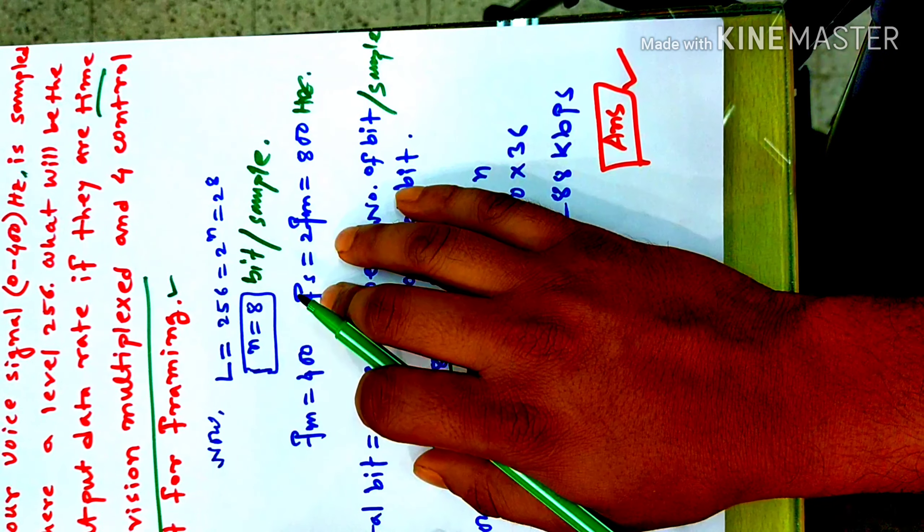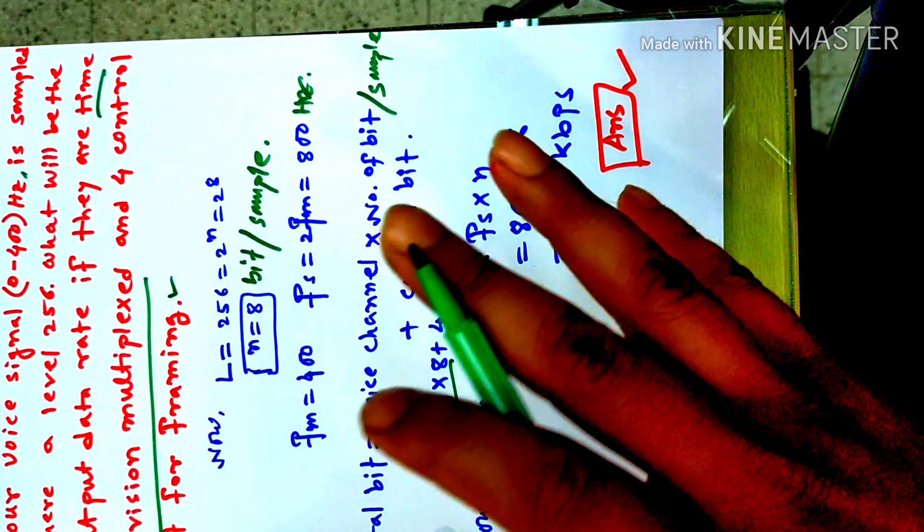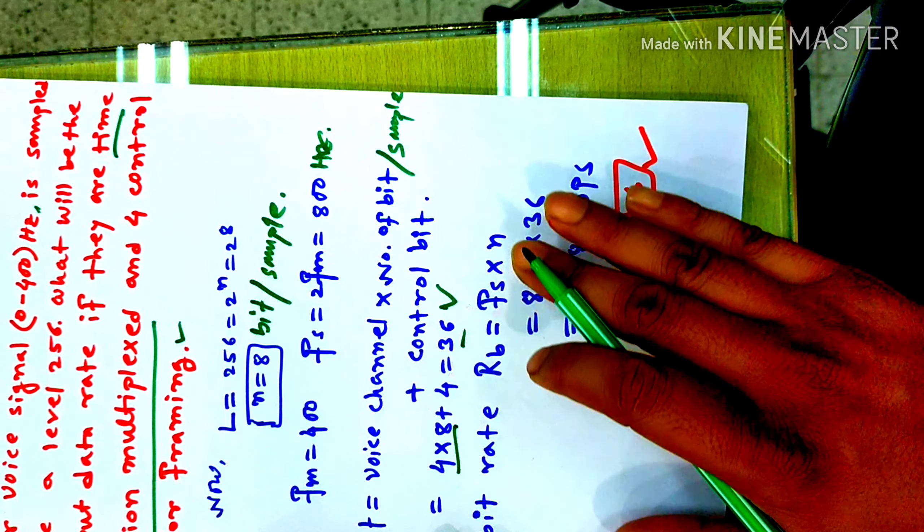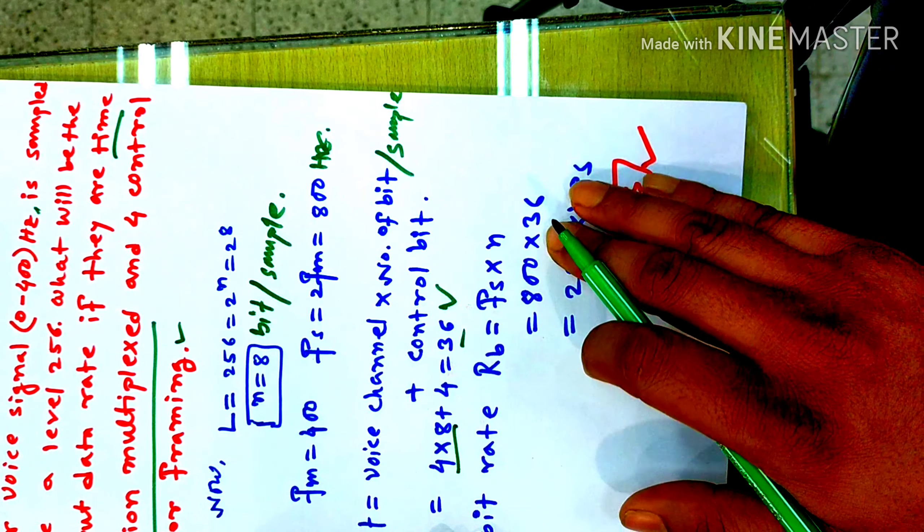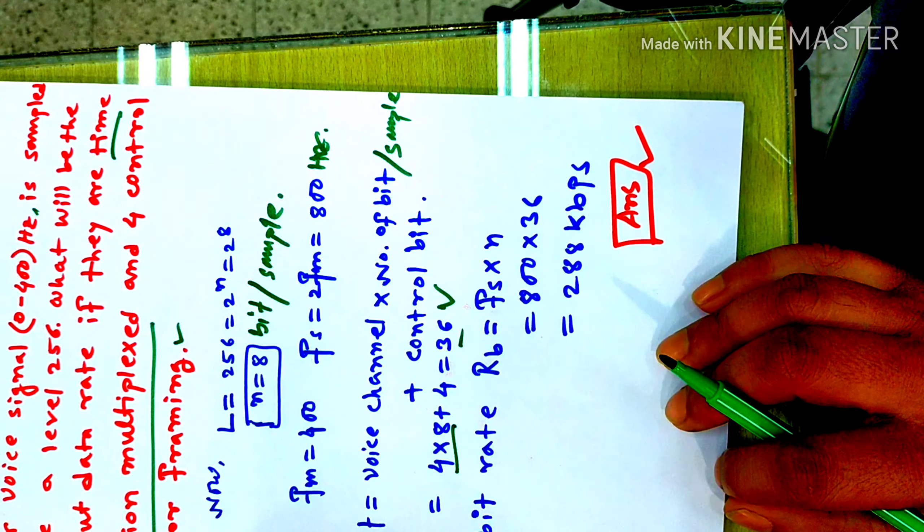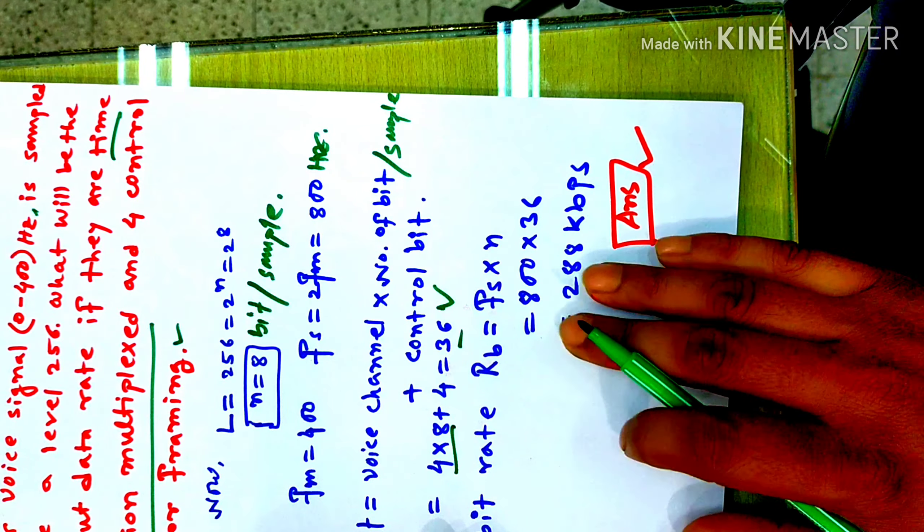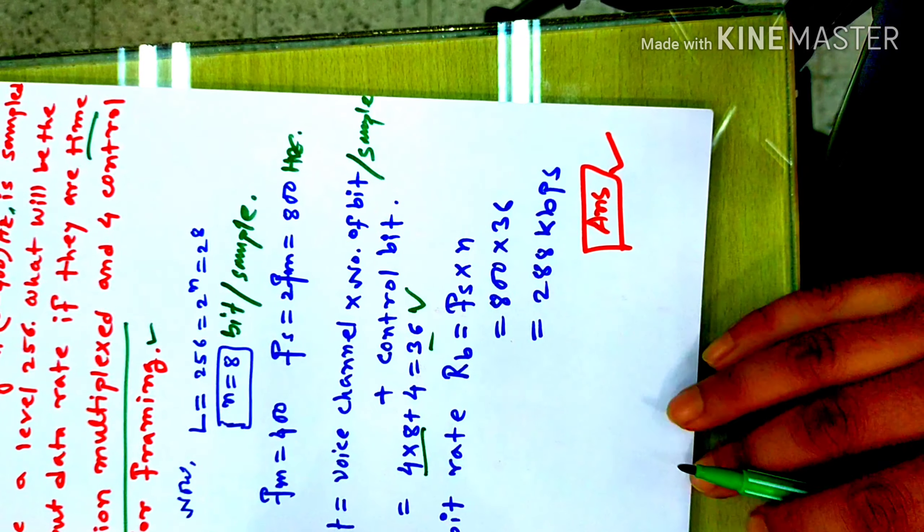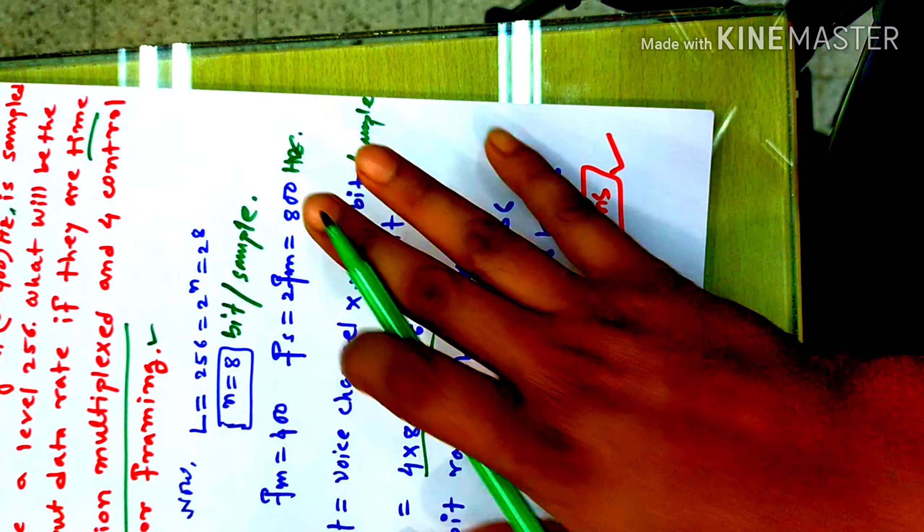We have the total bit and sampling frequency. Sampling frequency into N. That means 8 kHz times 36. We have the sampling frequency and number of bits per sample. We have the bit rate of 288 kbps.